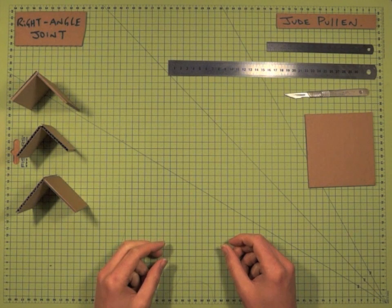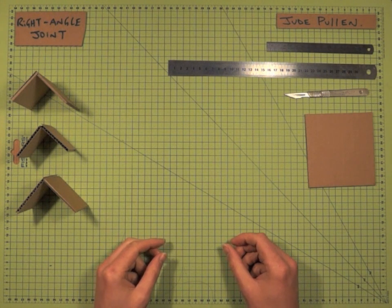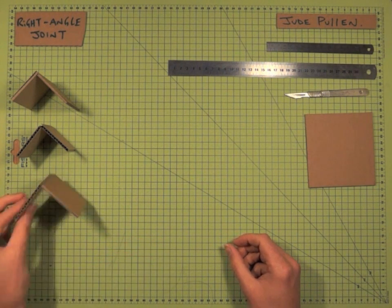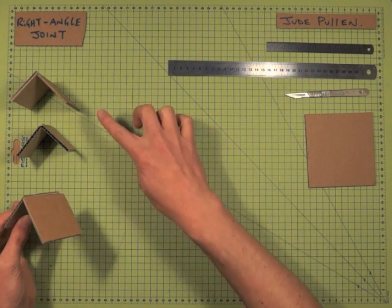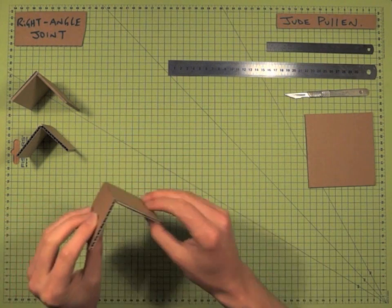OK, so this is a simple introduction to one of the basic joints in cardboard modelling, which is the right-angled joint. First I've got a good, a bad, and the ugly, if you will.